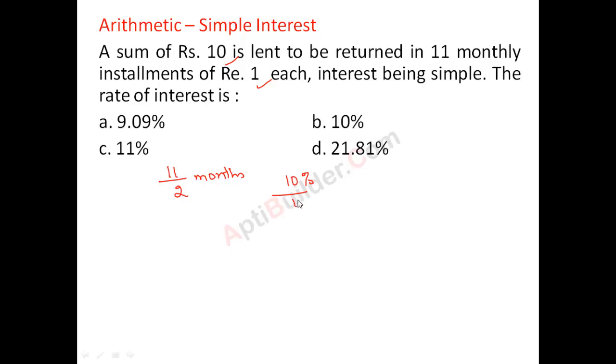It was the interest for 11 by 2 months, so what will be the interest for 12 months? So it is nothing but 2 times 12 divided by 11, which is going to be more than 20. My answer would be D.